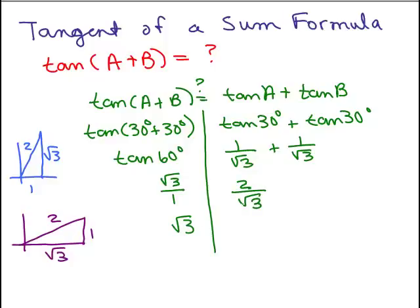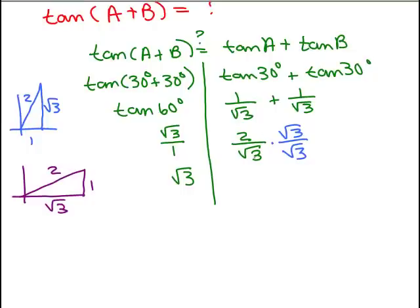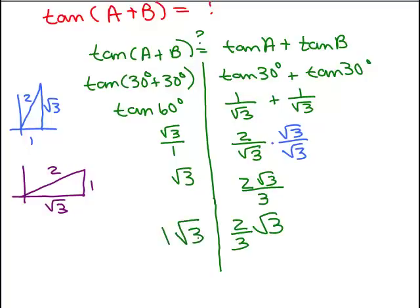Now you may look at these and say, well, maybe those are the same — they're not both simplified. So let's simplify. I'm going to multiply the numerator and denominator by square root of 3, which gives me 2 square root of 3 over 3. That's the same as 2 thirds times square root of 3. But on the left side, you only have square root of 3, which is 1 times square root of 3. So these certainly are not equal to each other.